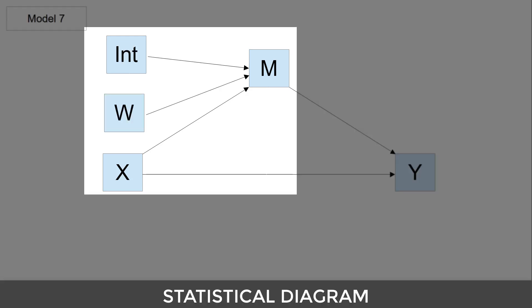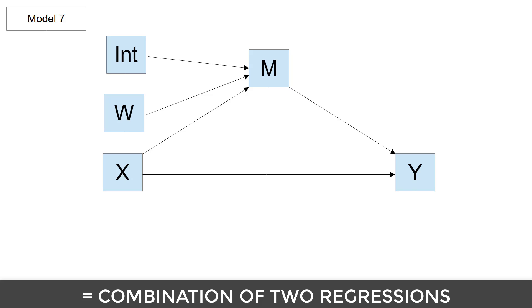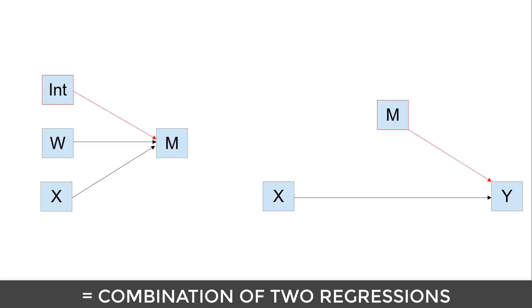For the moderation, we have the independent variable, the moderator, and the interaction predicting the mediator. This model is simply the combination of two multiple regressions: a multiple regression predicting the mediator and a multiple regression predicting the dependent variable. For multiple regression, we can easily perform power calculations using GPower.